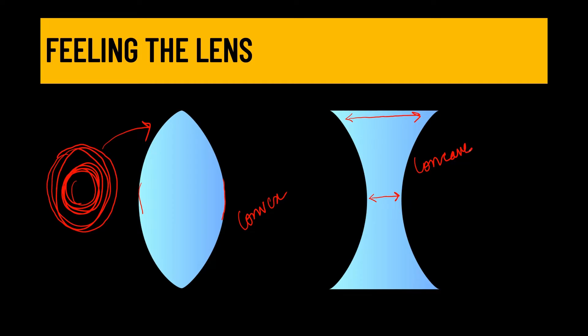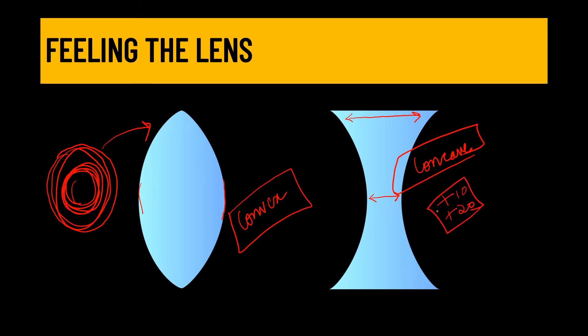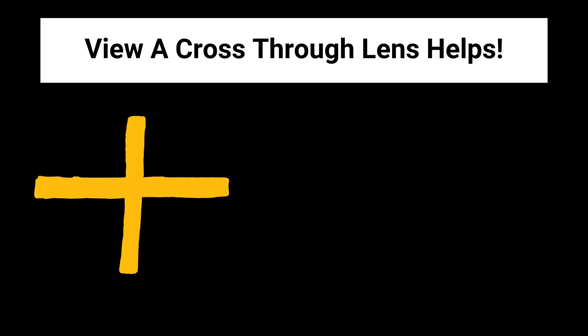This method works better when dealing with larger powers like plus 10 or plus 20 diopters. It may not work for lower power lenses, for which you will need to use other identification methods. A cross drawn on paper — or a linear object like a window grill or a linear tube light — can help with lens identification when you look at it through the lens.